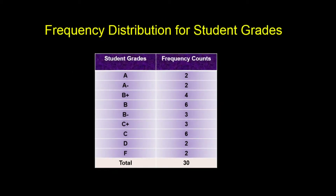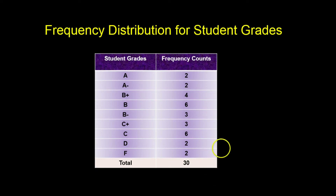A frequency distribution is a summary table in which the data are arranged into non-overlapping categories or class groupings. Here is a frequency distribution for the 30 student grades. Now the data starts to make some sense. We can see that two students received an A, two students received an A minus, four got a B plus, and so on. Since the sample size was 30, the total frequency counts must add up to 30.